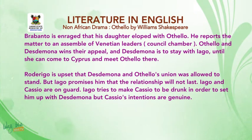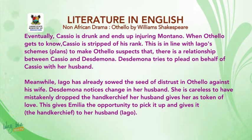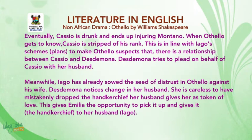Iago and Cassio are now on guard. Iago tries to make Cassio drunk in order to set him up with Desdemona, but Cassio's intentions are genuine. Eventually, Cassio gets drunk and ends up injuring Montano. When Othello gets to know, Cassio is stripped of his rank. This is in line with Iago's schemes — his plans to make Othello suspect that there is a relationship between Cassio and Desdemona.